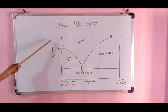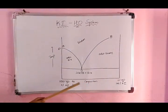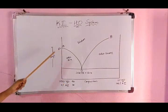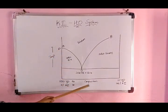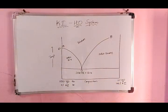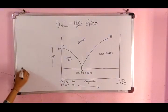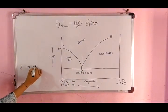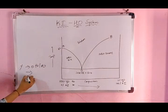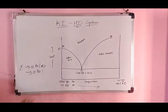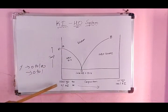The temperature axis goes vertically and the composition axis goes horizontally. Here is 100% water, because the melting point of ice is at this end. As you go along, water becomes zero and KI becomes zero at the other end, with KI percentage increasing as you move across. I have taken composition in percentage form, so it moves from zero to hundred. You can also take it in mole fraction, from zero to one.